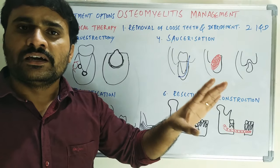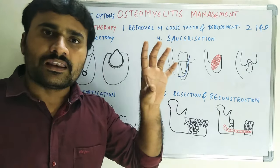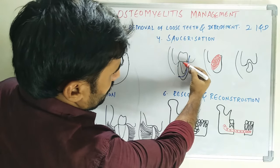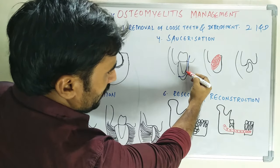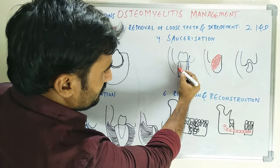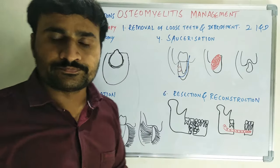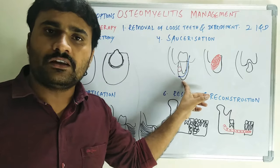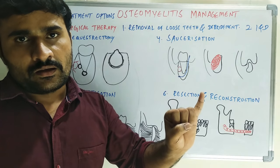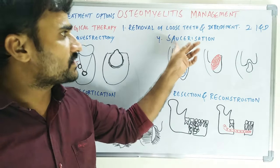Saucerization is the removal of the sequestrum along with the lateral cortex. In the diagram, the cheek and bone are visible; the blue line indicates the line of section, showing removal of the tooth, sequestrum, and lateral cortex — without involving the inferior border of the mandible. After removal, the bony defect is shaped like a saucer — hence the name saucerization.